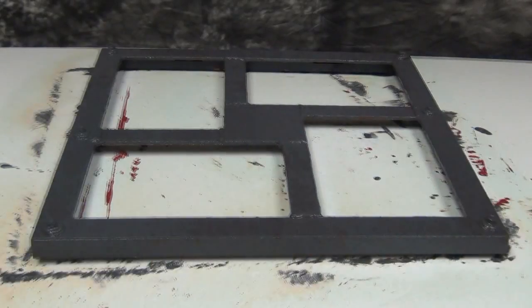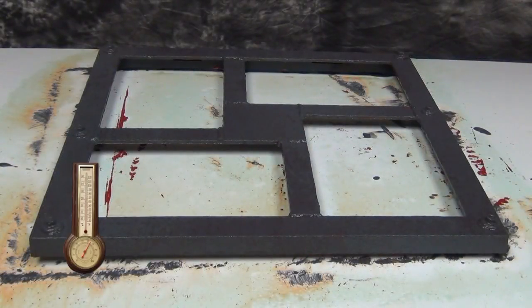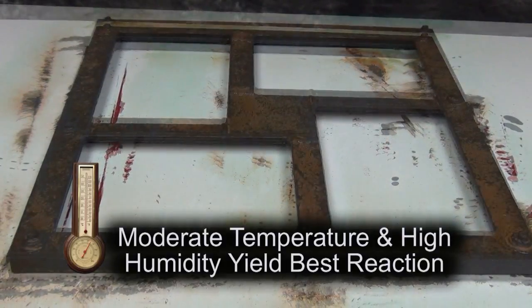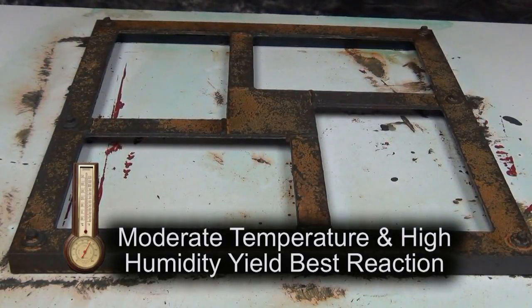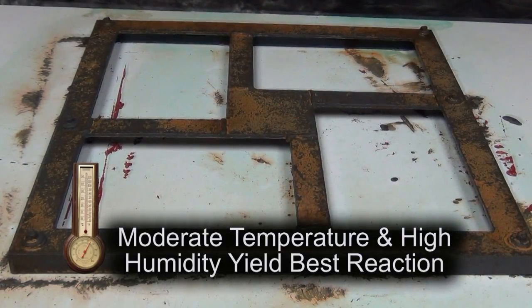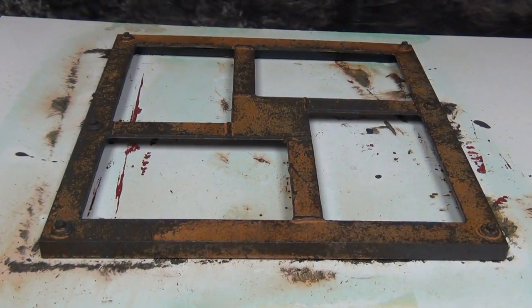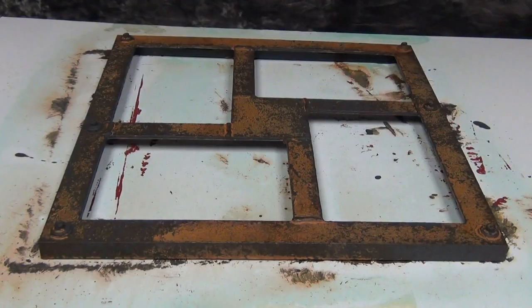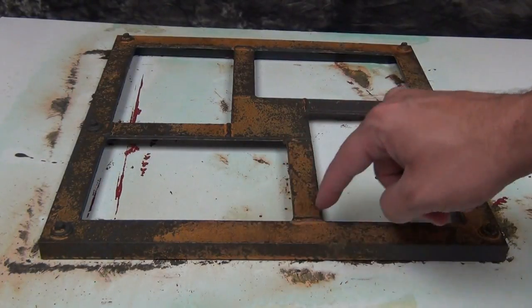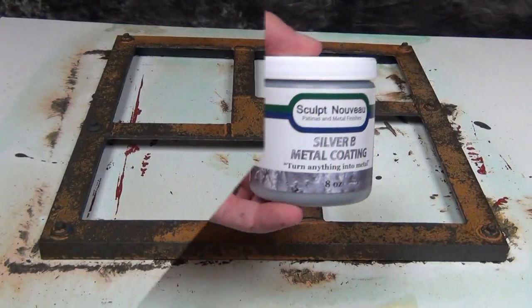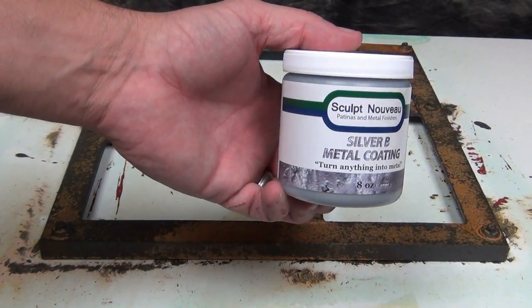For the best working environment, I recommend a moderate temperature of about 70 to 80 degrees and very high humidity. If you have low humidity and high temperature, it's going to be very difficult to get a good rich reaction. The finish you see now took about four hours for a complete reaction. We could have let this go a little longer, but four hours gave us a nice rich rust patina.